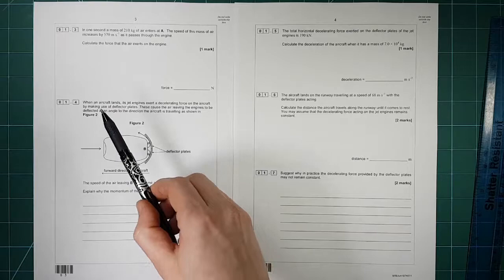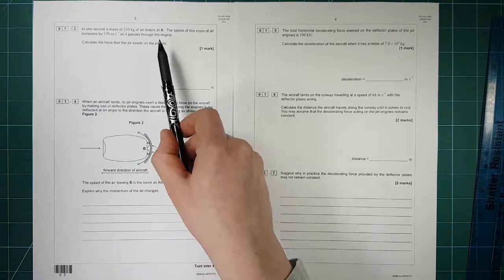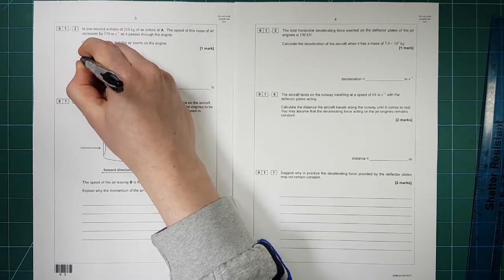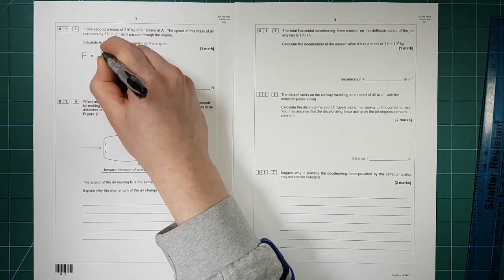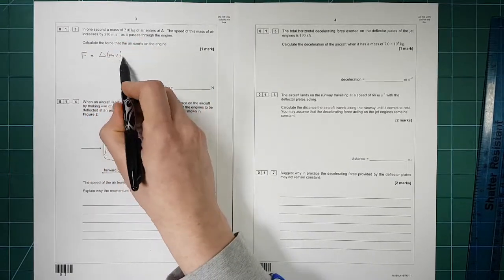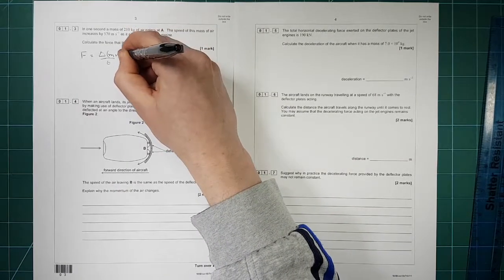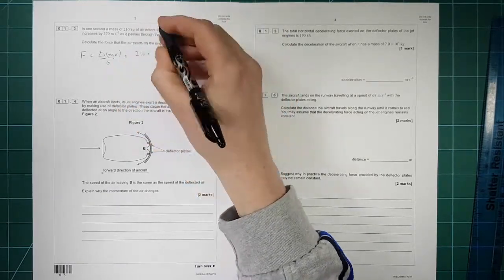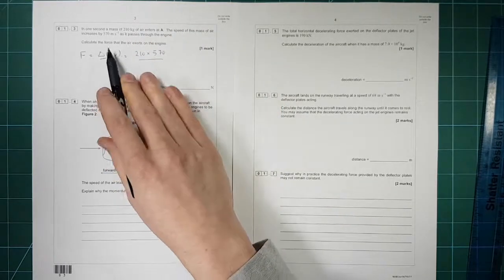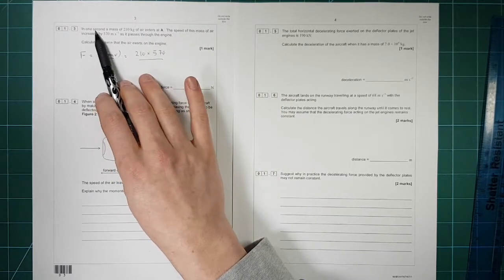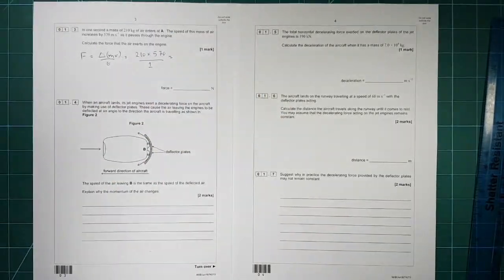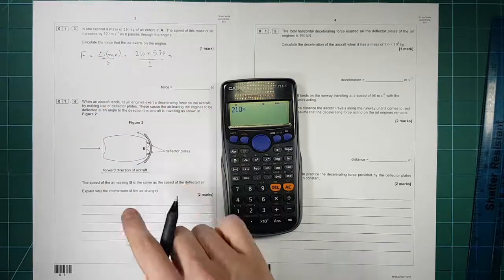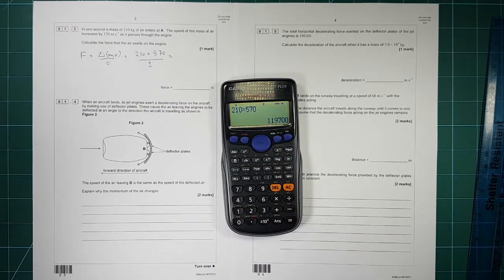So question one part three. In one second the mass of 210 kilograms of air enters A. The speed of the air increases by 570 meters per second as it passes through the engine. Calculate the force. So we need the definition of force which is rate of change of momentum. So that's momentum divided by T to get the rate of change of it. So the mass that's going through is 210 times by the velocity which is 570 divided by the time. Well this is one second. So time is one there. So take your calculator.